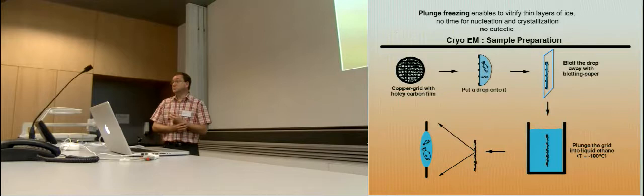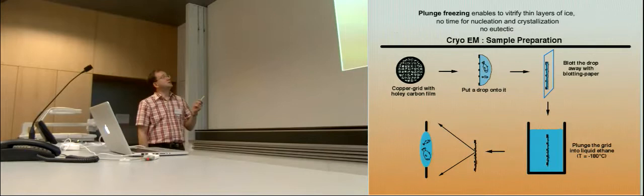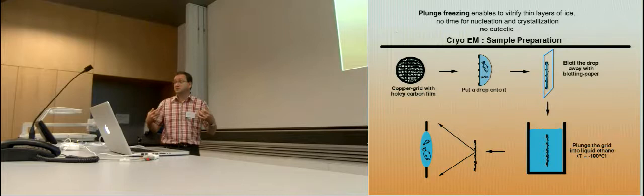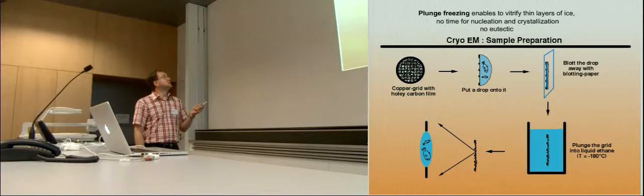Then comes the plunge freezing. This enables to vitrify ice or water. If your sample is thin enough, the speed of freezing is so quick that it does not allow any nucleation or crystallization of the ice. You have no eutectic, it means it does not have a phase separation that you would have pure crystals and your solute is pushed away and concentrated and getting high salt. No, everything goes like frozen in its state.